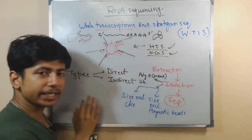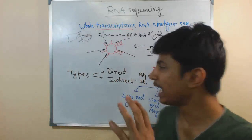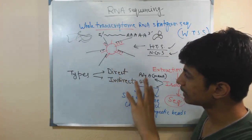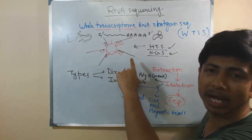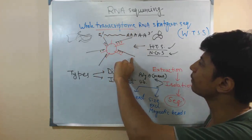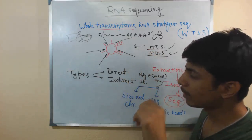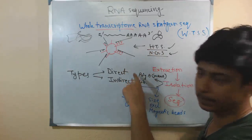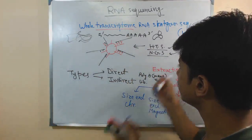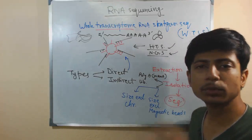Now about the direct and indirect types of RNA sequencing. In some cases, what we do is sequence only the mRNA directly — we add this mRNA to the beads and then sequence the mRNA content directly, the ribose sugar content. That is called the direct type of sequencing, because we are sequencing the RNA directly.